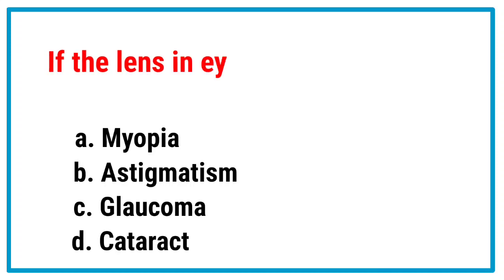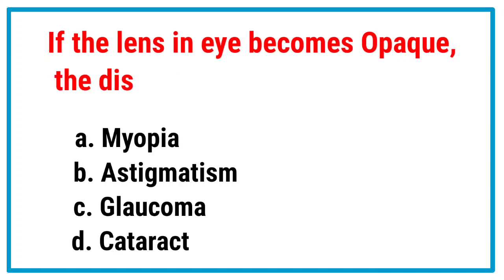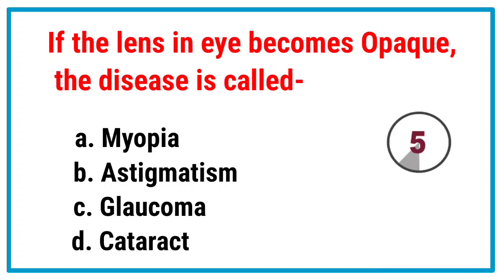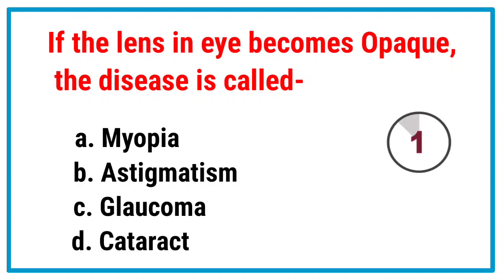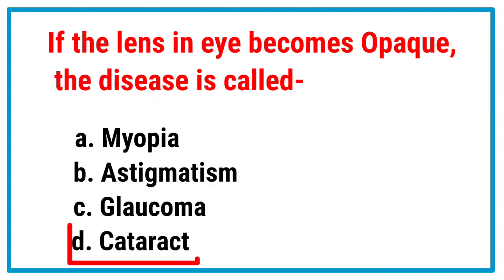If the lens in the eye becomes opaque, the disease is called — correct answer is cataract.